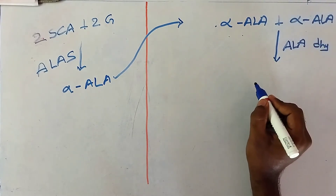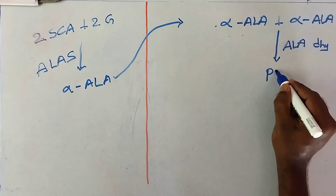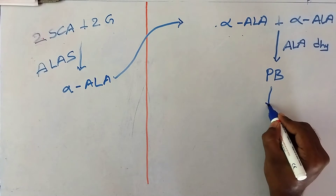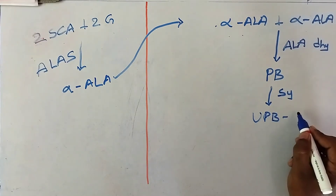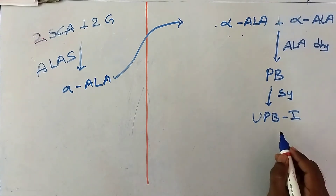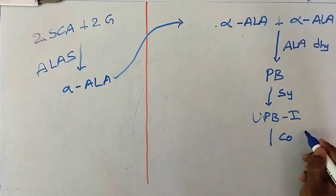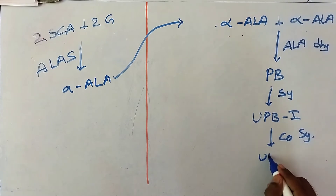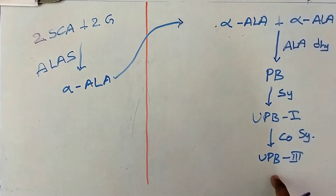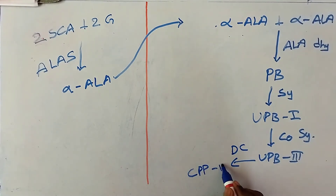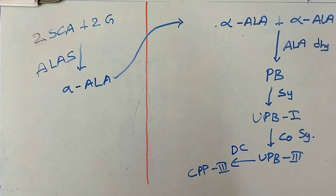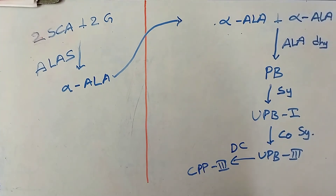These two molecules of ALA undergo ALA dehydrogenase to form porphobilinogen, PBG. This PBG undergoes synthase and forms uroporphobilinogen 1, UPB1. This UPB1 undergoes synthase and forms UPB3. This UPB3 undergoes decarboxylase and forms coproporphyrinogen 3, CPP3.